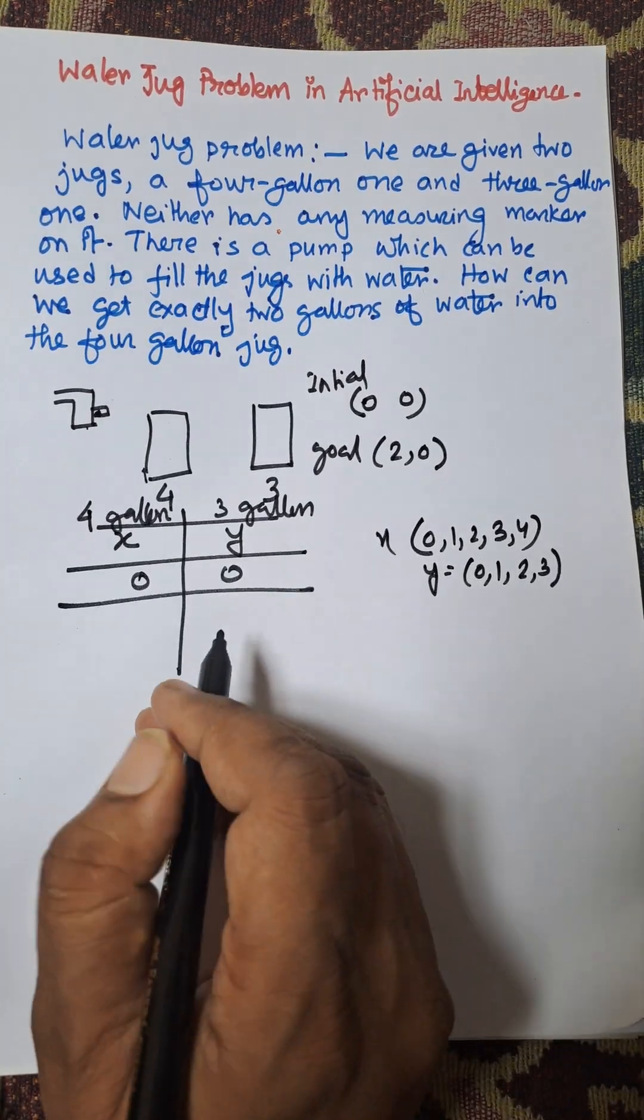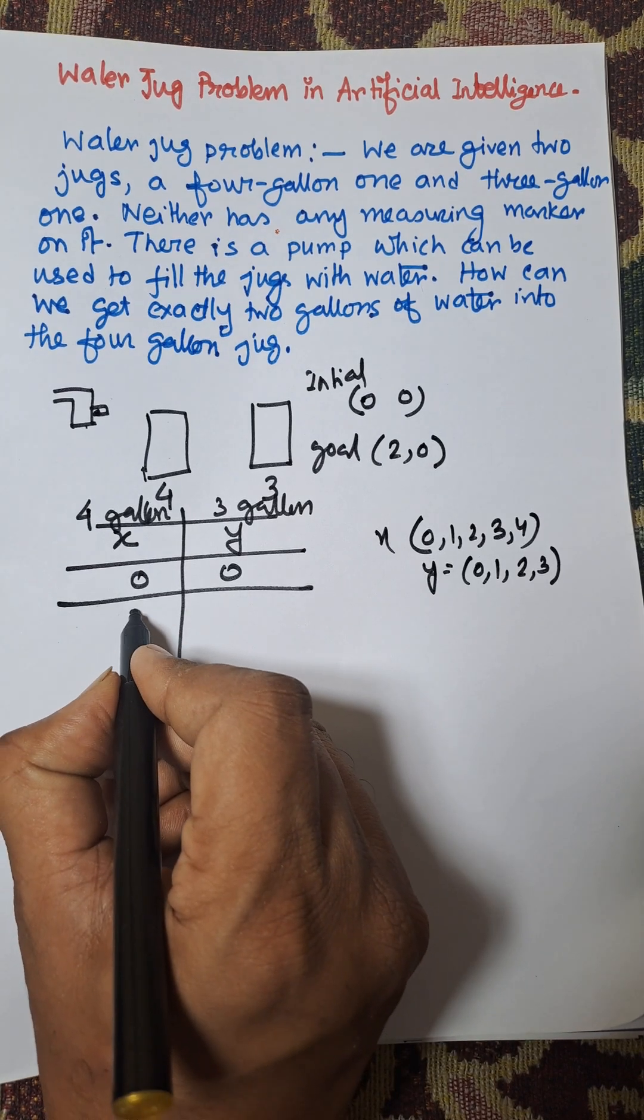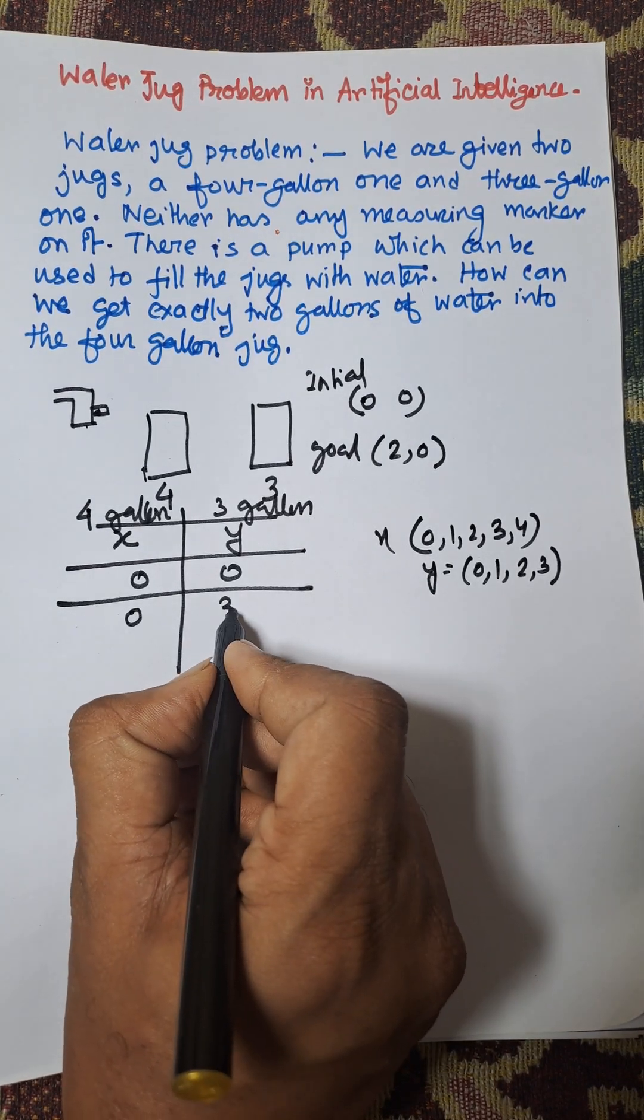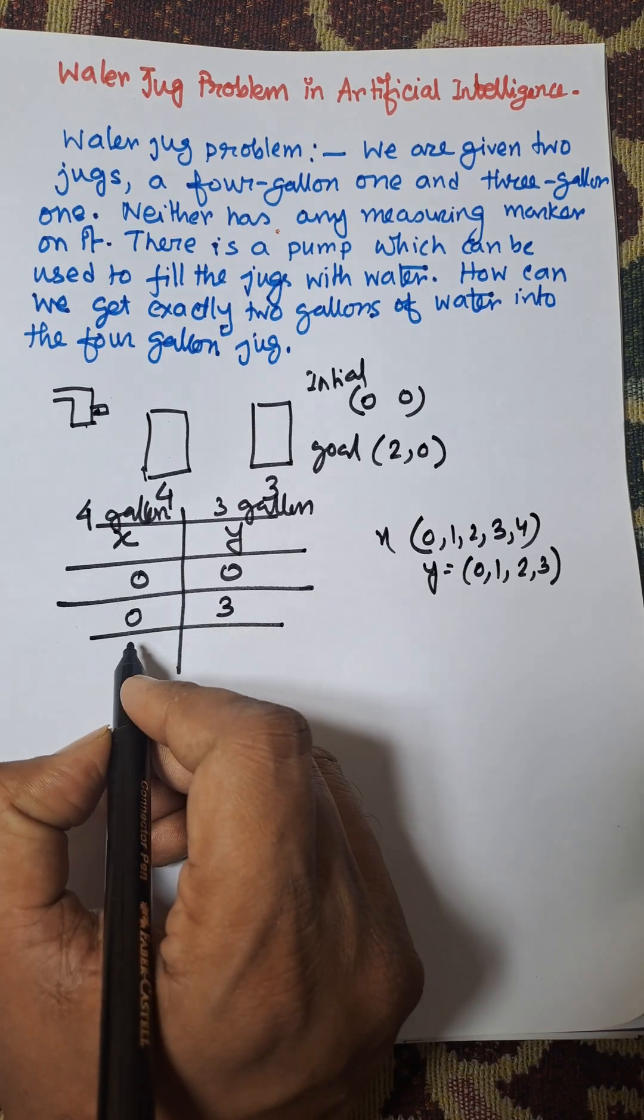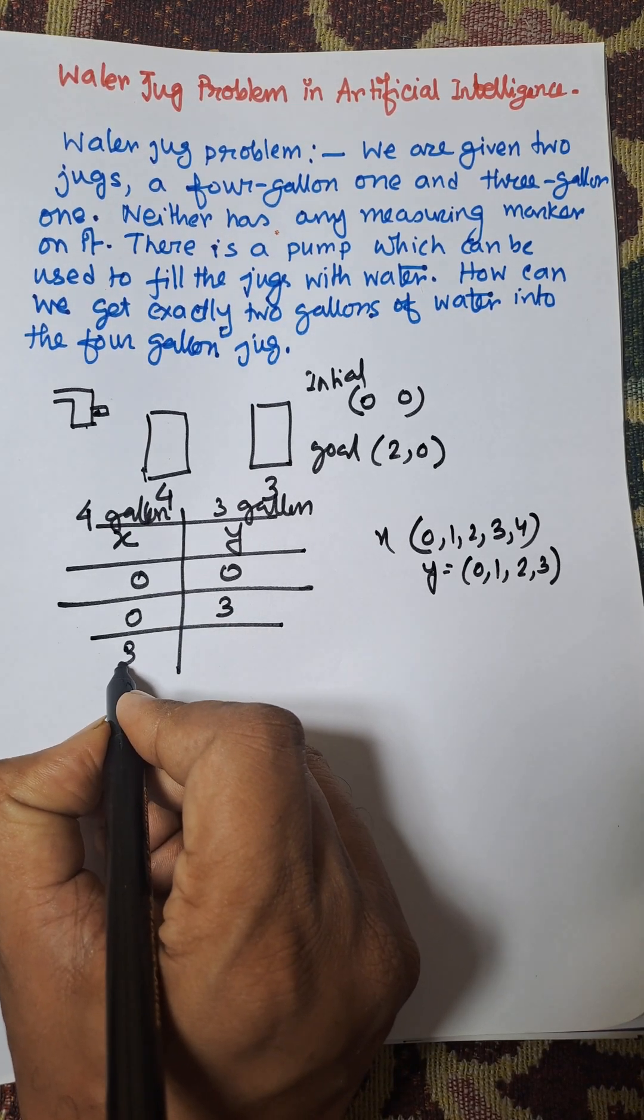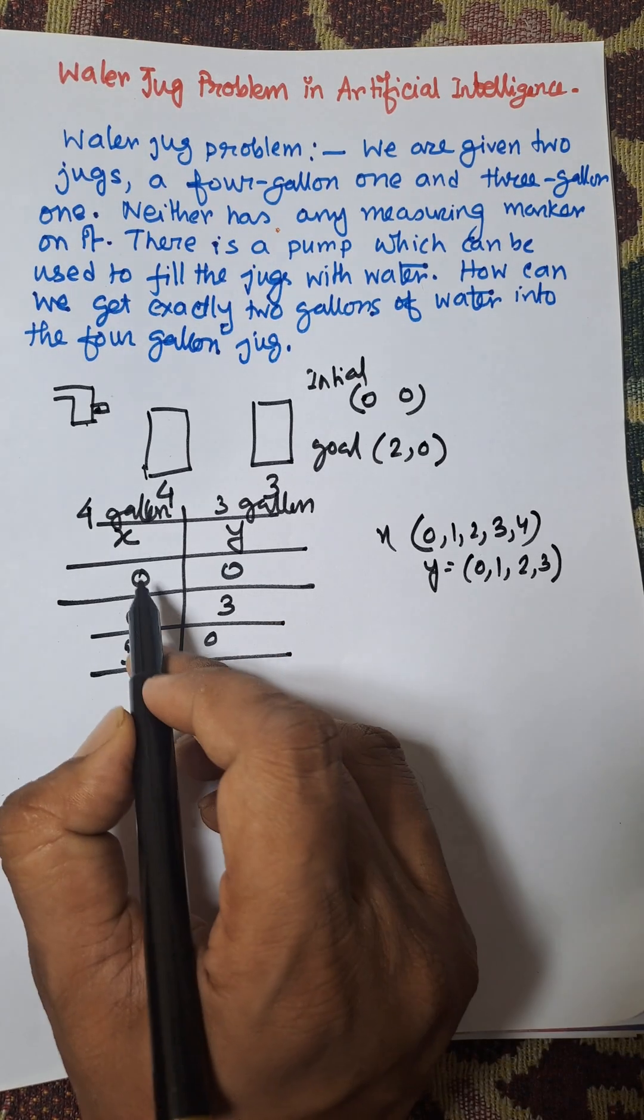Initially this is 0,0. Now first, we need to fill up the 3-gallon jug - 0,3. Now transfer the 3-gallon jug into the 4-gallon jug - 3,0.